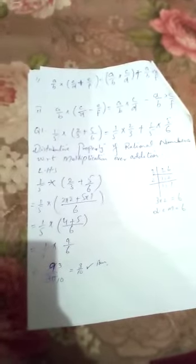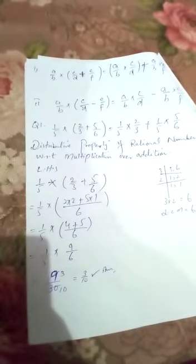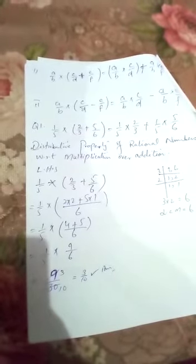Dear students, taking left hand side. After this we will write the left hand side 1 by 5 multiply 2 by 3 plus 5 by 6. Now as you know, in a bracket which we have rational numbers, first we will solve it. Firstly, we will take the LCM of 3 and 6. The LCM of 3 and 6 is 6.